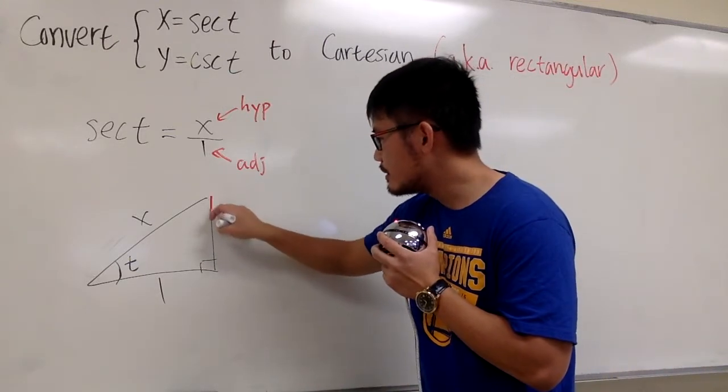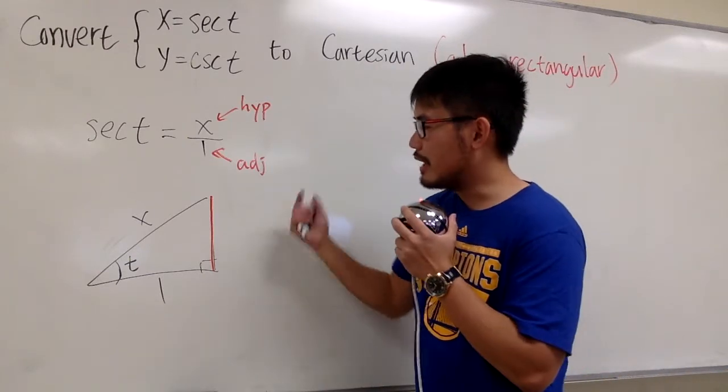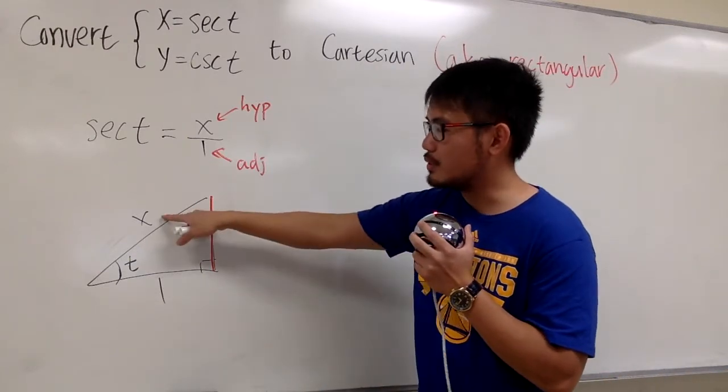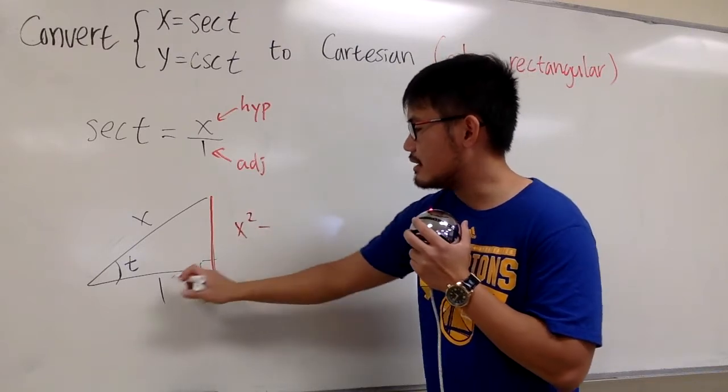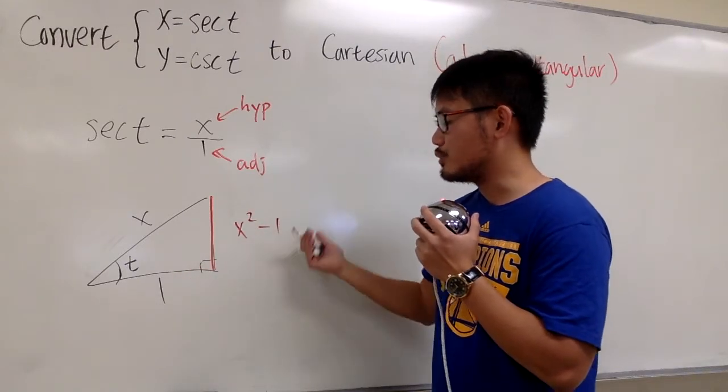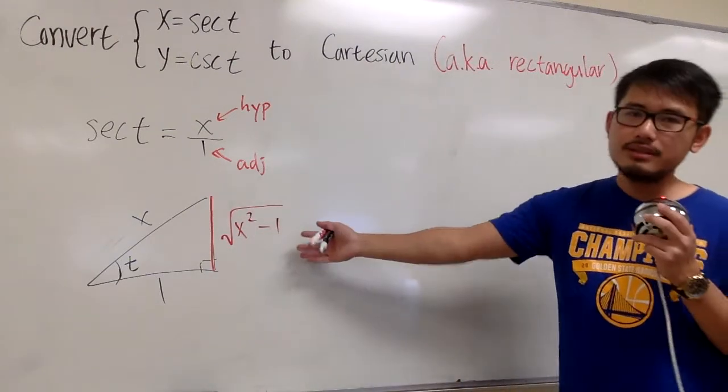I have to figure out this missing side. That missing side is just, you take the square root of the hypotenuse squared, which we have x squared, minus the side squared right here, which is 1 squared, which is just 1. And then we have that positive square root. This is what we have.